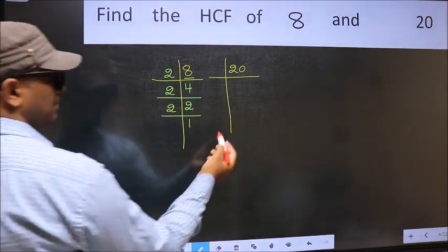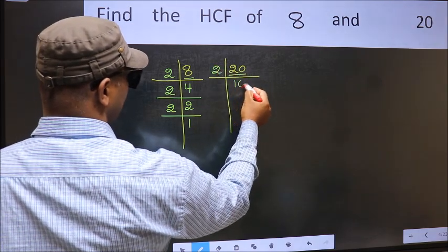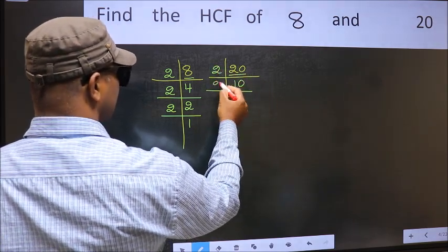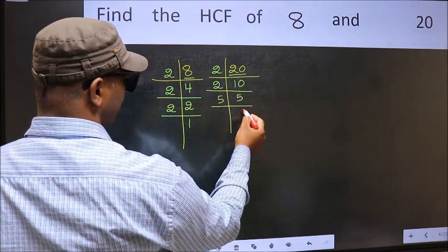Now the other number 20. 20 is 2 times 10. 10 is 2 times 5. 5 is a prime number, so 5 times 1 is 5.